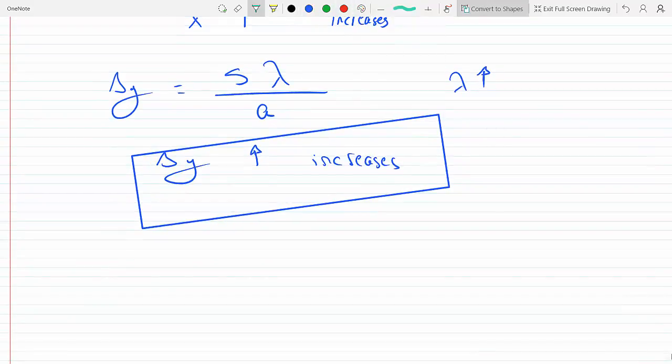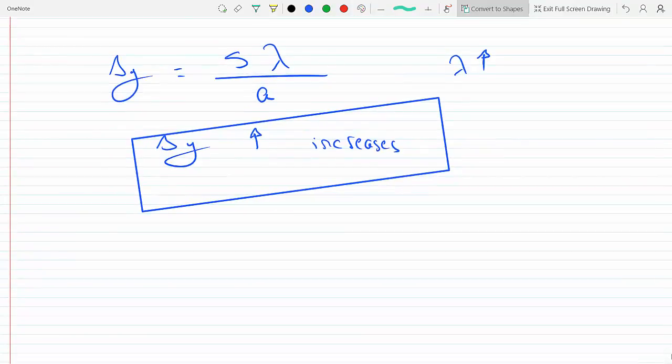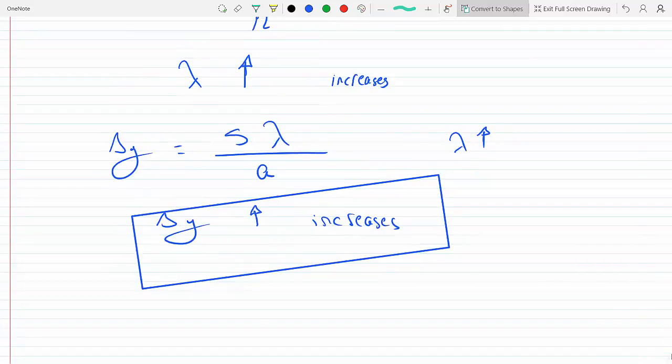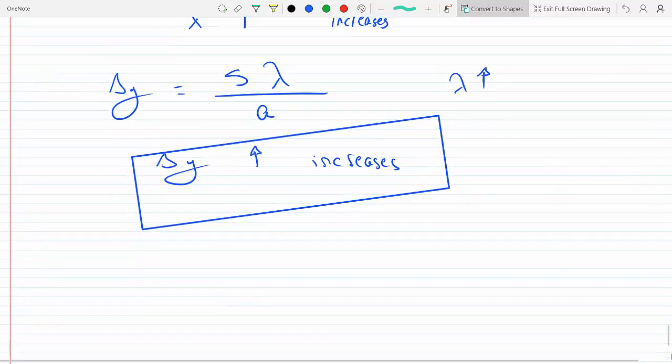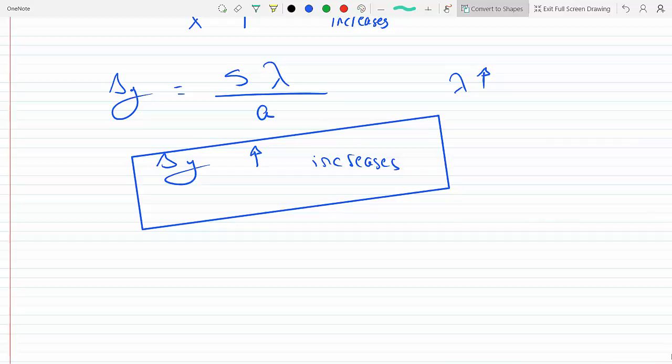And now if we want the quantitative answer, well we could figure out what the new wavelength is having the old wavelength. And so we know that delta y prime has to equal s times lambda prime over a.